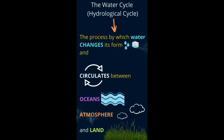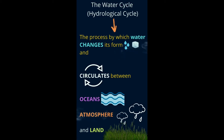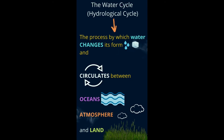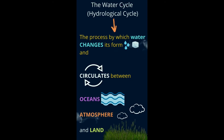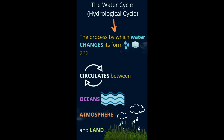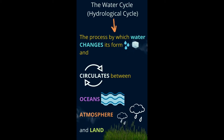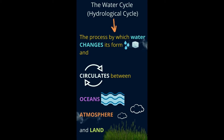The water cycle. What is the water cycle? Remember we learnt the different forms of water, or the different states of water — solid, liquid and gas. So what is the water cycle? It is the process by which water changes from one form to another.